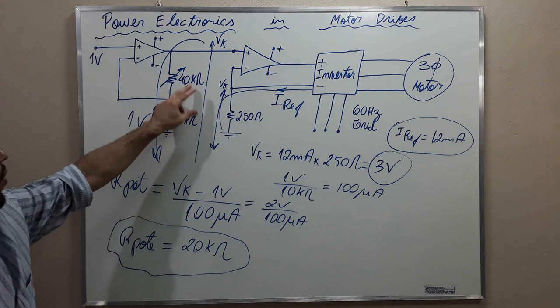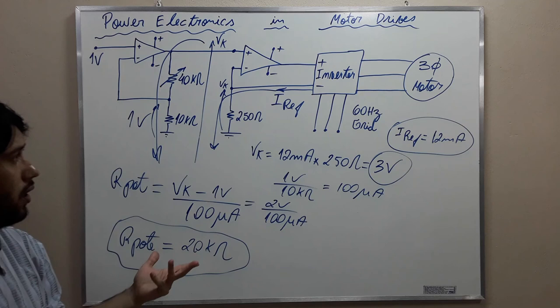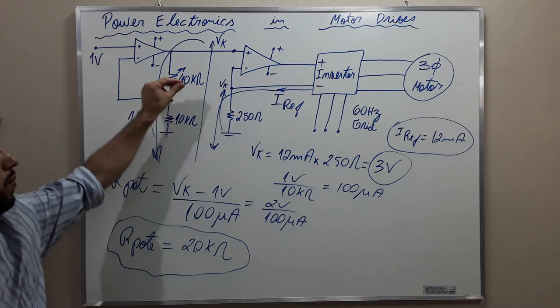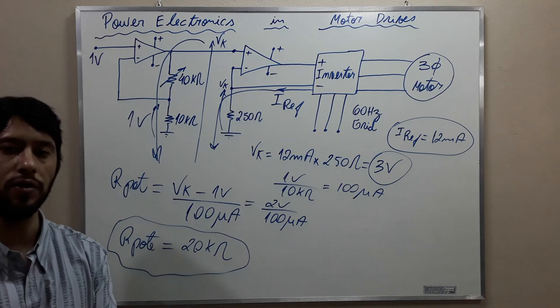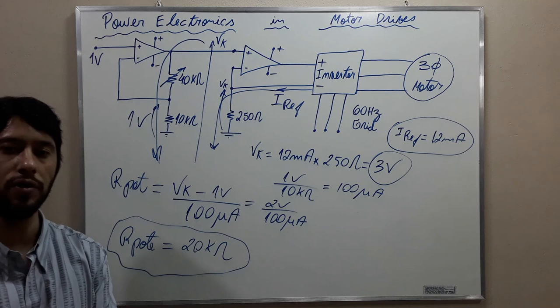So this is our final answer: adjust the potentiometer to 20 kilohms, and the motor will behave in accordance with what you want. You can do it automatically using scalar systems, or you can adjust it by hand. My friends, this was the video I wanted to make. I hope you enjoyed it. I am a teacher — if you want to book a lesson with me, use my WhatsApp number. Goodbye!